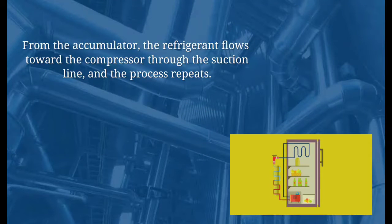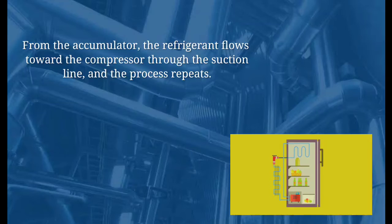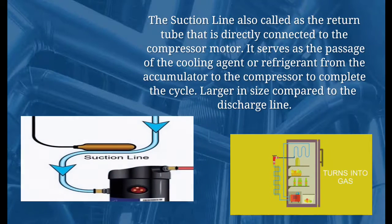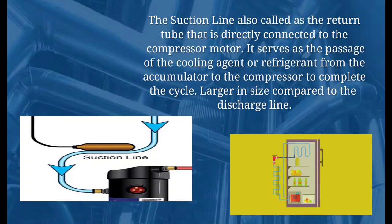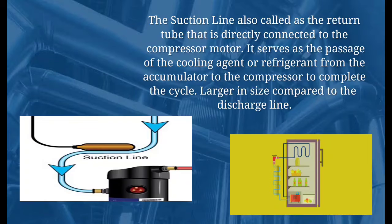From the accumulator, the refrigerant flows toward the compressor through the suction line and the process repeats. The suction line is also called the return tube, which is directly connected to the compressor motor. It serves as the passage of the refrigerant from the accumulator to the compressor to complete the cycle, and it is larger in size compared to the discharge line.